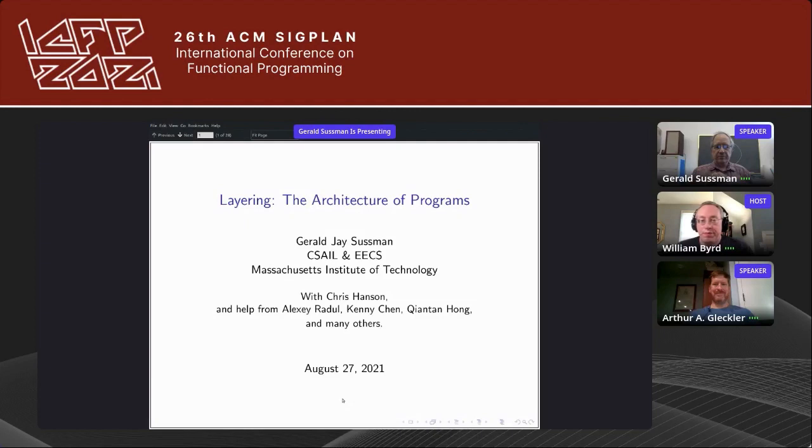Welcome back everyone. This is the last session of this year's Scheme and Functional Programming Workshop. We have Jerry Sussman giving a talk on layering the architecture programs. John Cowan will give a talk on the R7RS process after, but through scheduling mix-ups, Jerry will go first.